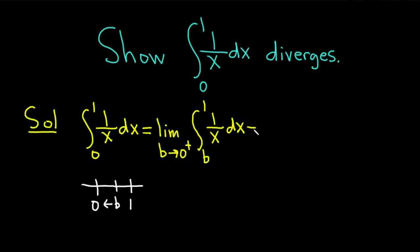This is equal to the limit as b approaches 0 from the right. This is a popular integral, 1 over x dx. When you integrate 1 over x with respect to x, you get the natural log of the absolute value of x, and we're going from b to 1.